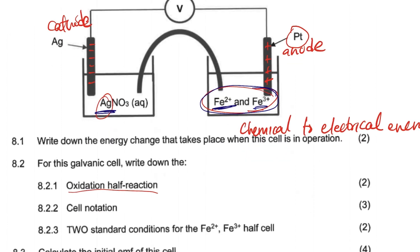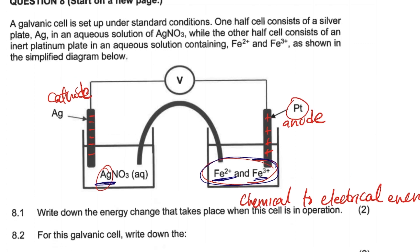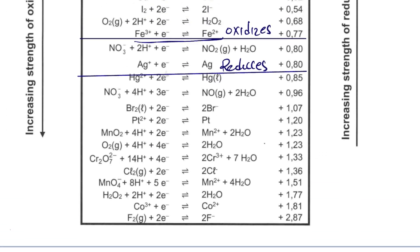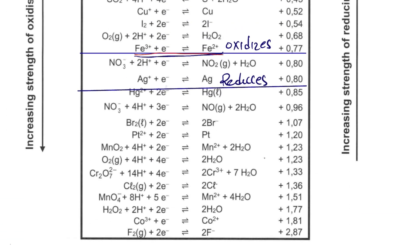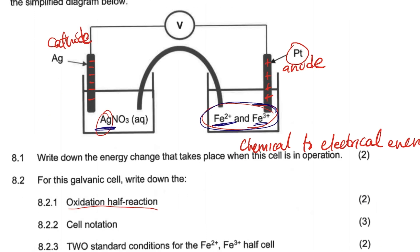The cathode receives the electrons, and the anode becomes positively charged once it gives out the electrons. This electrode is inert and does not take part in the reaction. For the oxidation half-reaction, since it's oxidizing, we write: Fe²⁺ → Fe³⁺ + e⁻. This is the oxidation half-reaction.